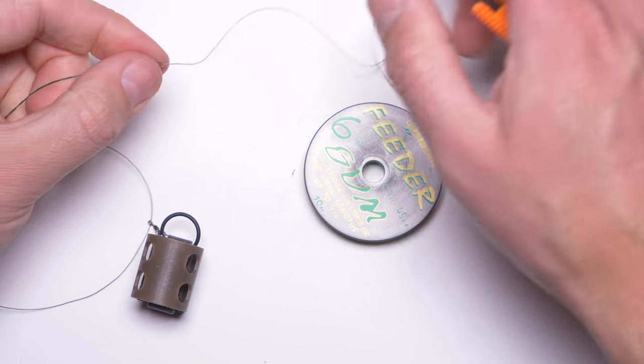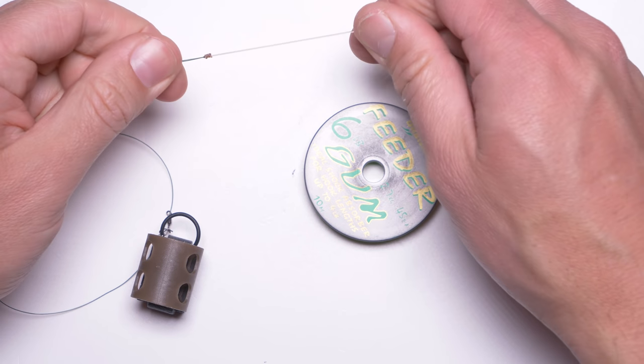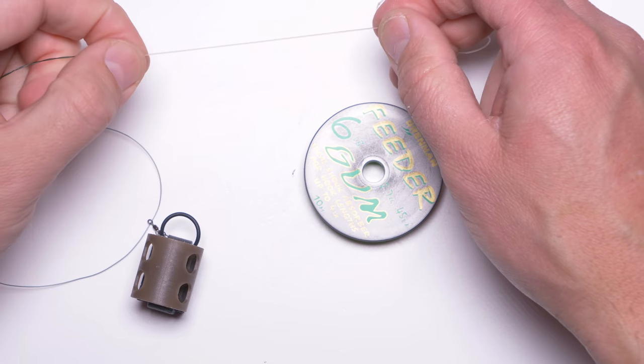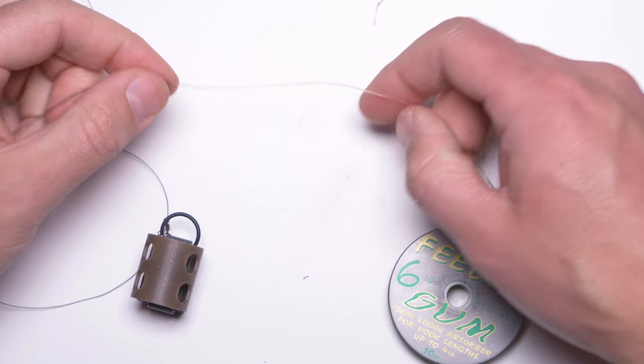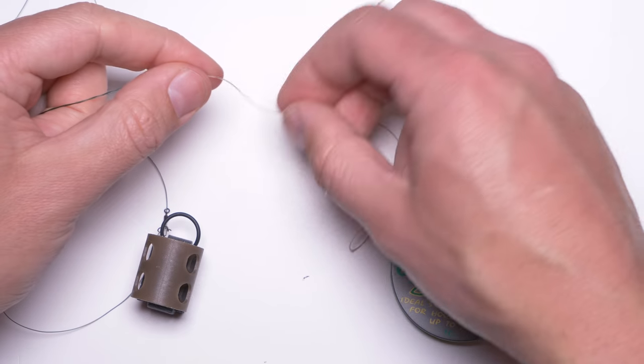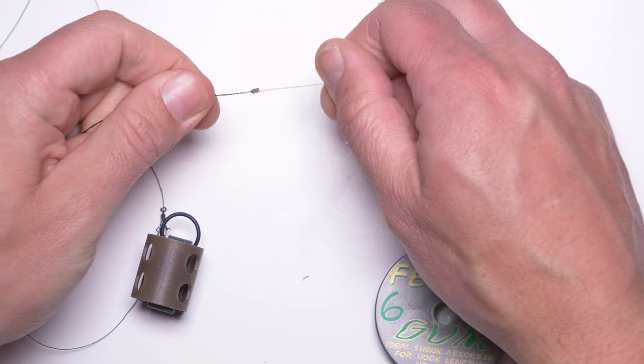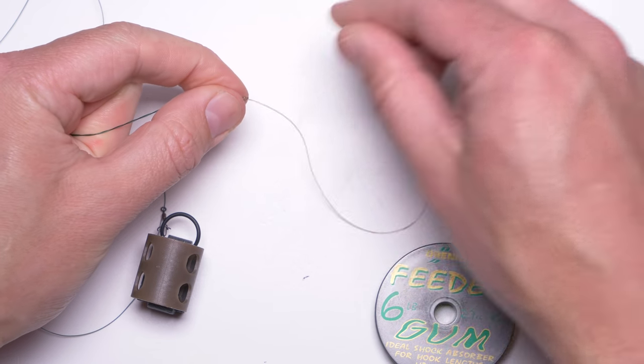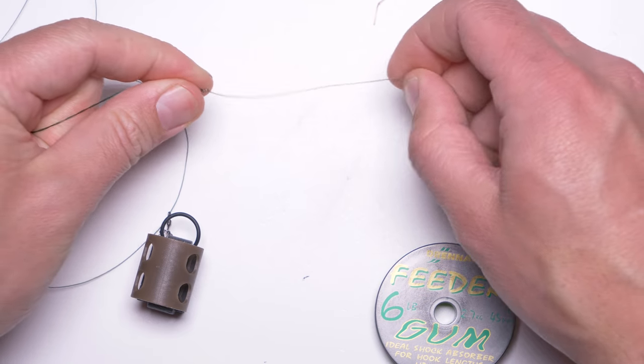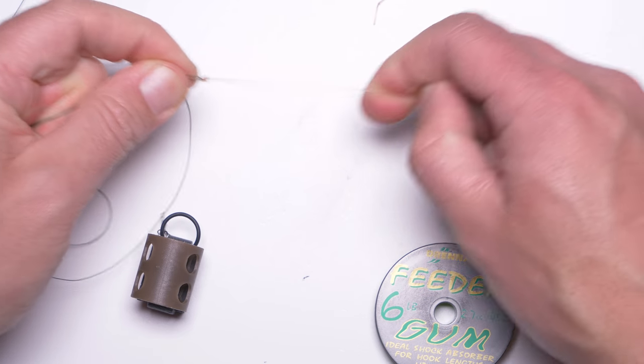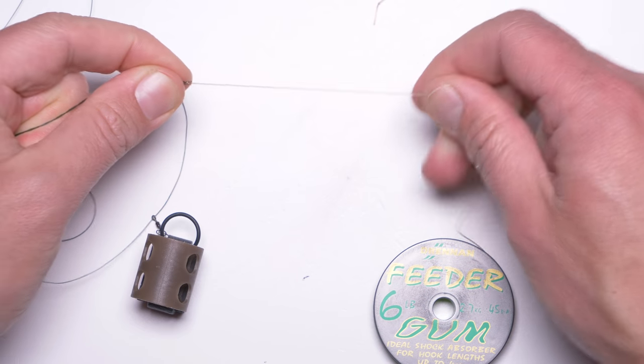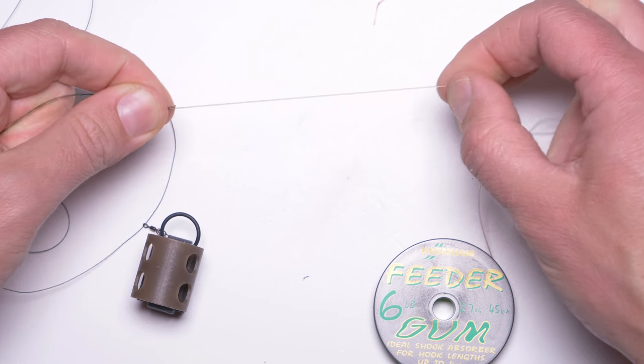Now, I would say that the best length of feeder gum is about 5 to 7 centimeters. You don't want to go any longer than that because having very long and supple material, which feeder gum is, you will increase the chances of the rig tangling. And also, the stretch feeder gum has is just enough in 5 or 7 centimeters.